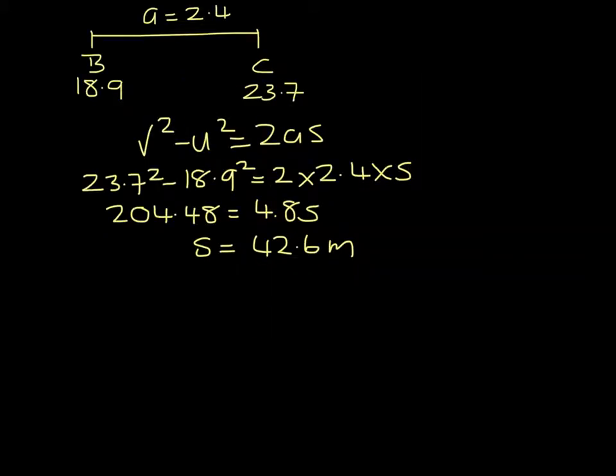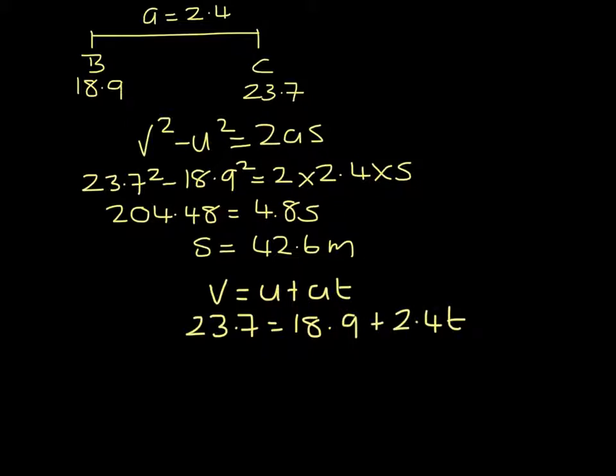Finally, I'm going to find the time. And I'm going to use V equals U plus AT. So 23.7 has to equal 18.9 plus 2.4 times T. And 23.7 minus 18.9 is 4.8, which equals 2.4 T. So T is 2.